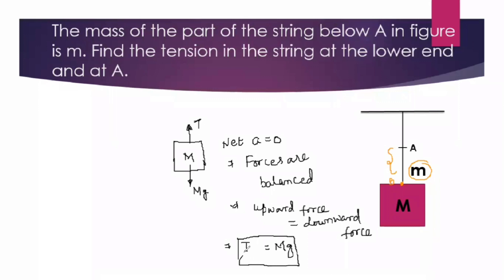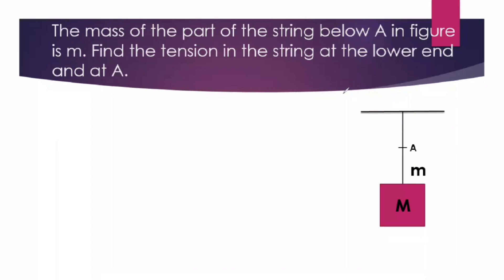So the value of tension at the lower end of the string is Mg. Now let us solve the second part. In the second part we have to find the tension at A. Here the mass of the string below point A is M.